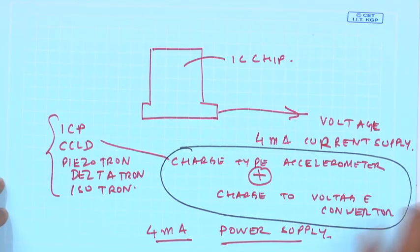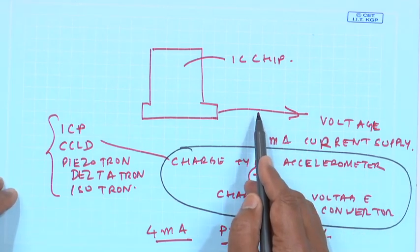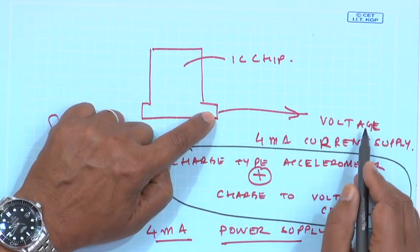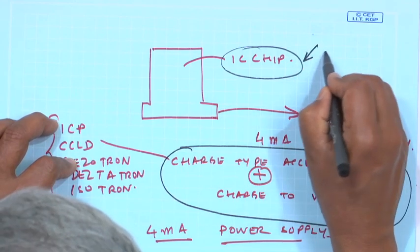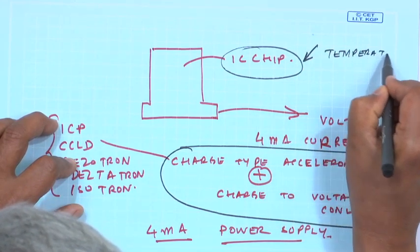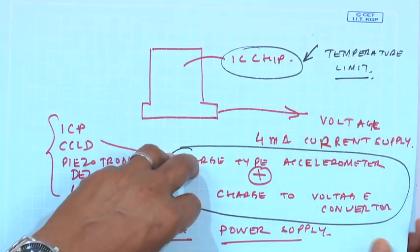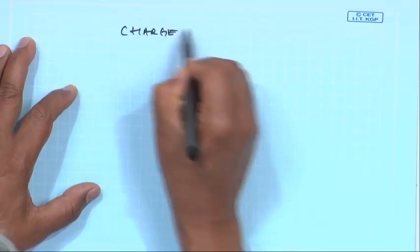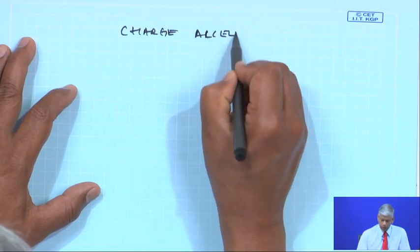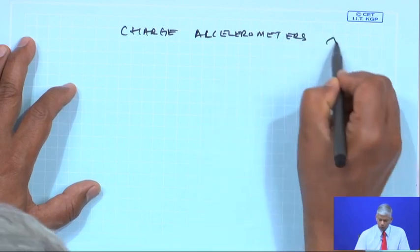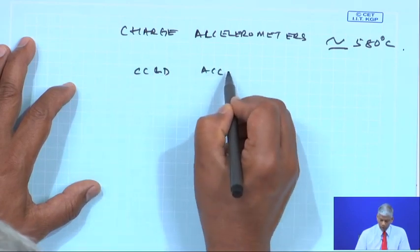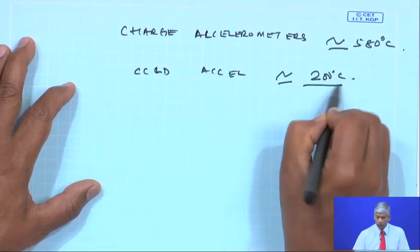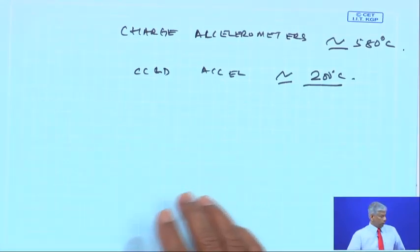The advantage of built-in converters is you do not need to carry a separate charge-to-voltage preamplifier or power supply. The voltage output can be connected directly to a signal recording unit. However, there is a temperature limitation because the IC chip is inside. Charge-type accelerometers can operate up to around 580 degrees Celsius, but CCLD accelerometers can only go up to about 200 degrees Celsius. For high-temperature applications, charge-type accelerometers are required.